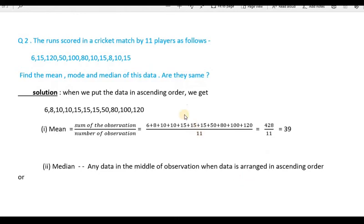Question number 2. The runs scored in a cricket match by 11 players are: 6, 15, 120, 50, 100, 80, 10, 15, 8, 10, 15. We have to find the mean, mode, and median, and also check whether they are the same.